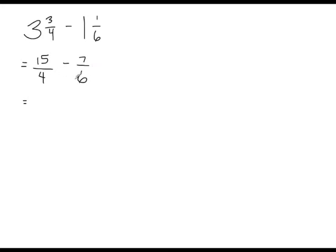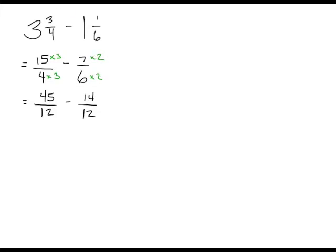Before we subtract, we need to find a common denominator. The lowest common multiple of 4 and 6 is 12, since both go into 12 evenly. We multiply 4 by 3, so 15 times 3 gives us 45 — our first fraction is 45 over 12. We multiply 6 by 2, so 7 times 2 is 14. Now we subtract: 45 minus 14 gives us 31, and our denominator stays the same, so 31 over 12.